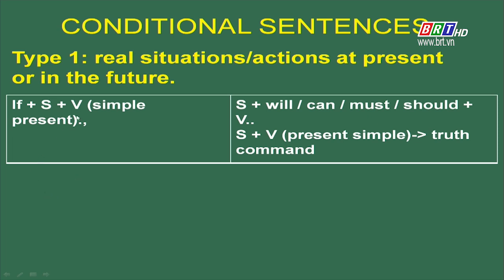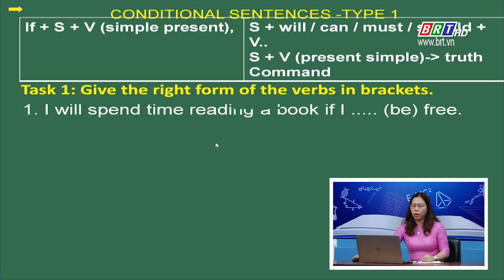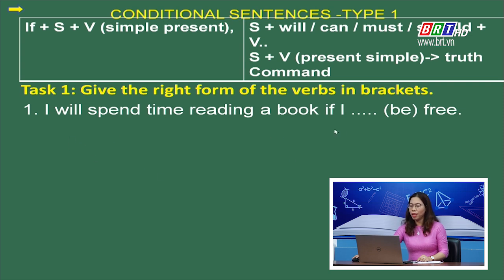Now, let's practice. Bây giờ chúng ta có bài tập thực hành câu điều kiện loại 1. Exercise 1: Give the right form of the verbs in brackets — hãy cho hình thức đúng của động từ trong ngoặc. Khi làm bài, các em cần chú ý động từ cần chia đang được cho ở mệnh đề chính hay mệnh đề điều kiện để xác định ra điểm ngữ pháp cần sử dụng cho chính xác.